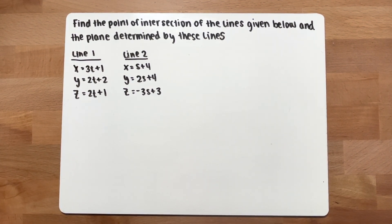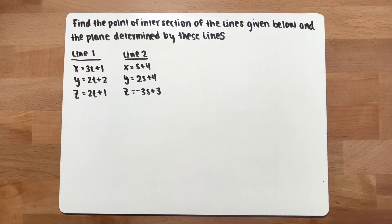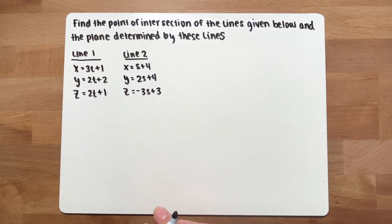Find the point of intersection of the lines given below and the plane determined by these lines. In this problem, you will be finding two things: the point of intersection and the plane determined by these lines. Starting from the first section, we're going to find the point of intersection.